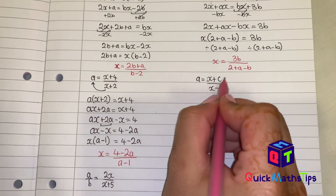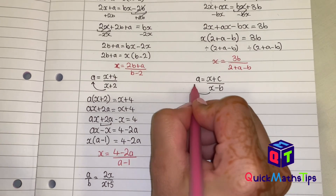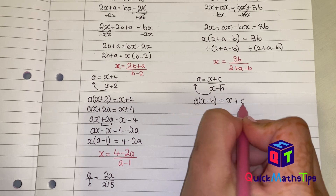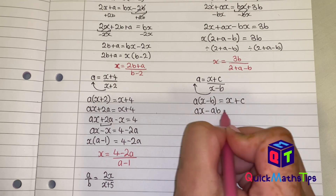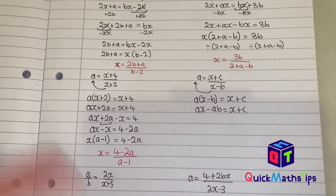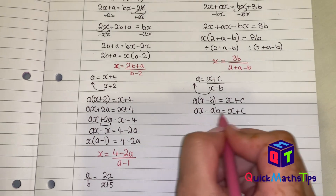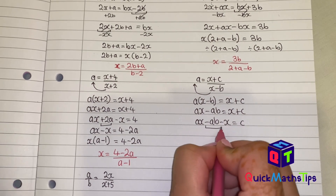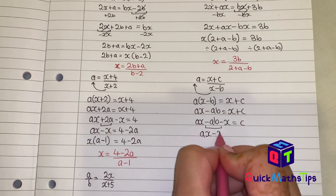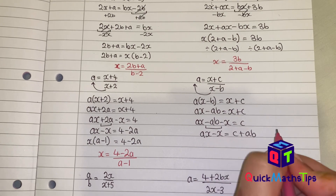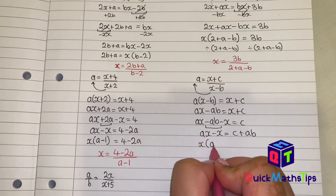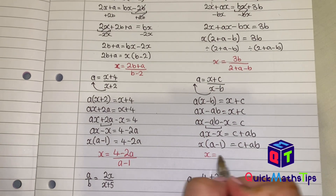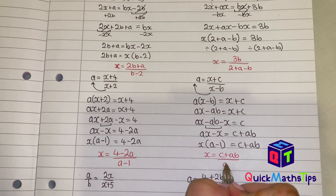Again, you have a equals x plus c over x minus b, so take the denominator to the other side: a bracket x minus b equals x plus c. Expand the brackets to get ax minus ab equals x plus c. Group the x terms by subtracting x on both sides: ax minus ab minus x equals c. Then add ab to both sides: ax minus x equals c plus ab. Factorize by x: x bracket a minus 1 equals c plus ab. Divide by a minus 1, so x equals c plus ab divided by a minus 1.